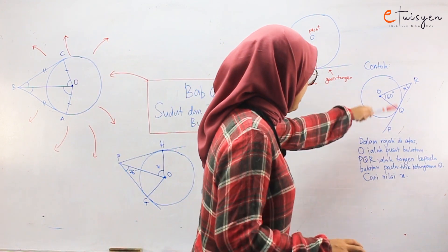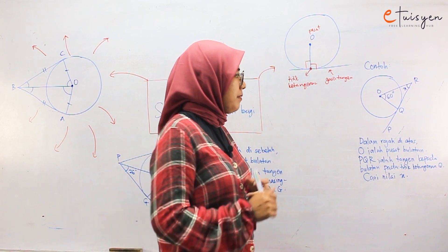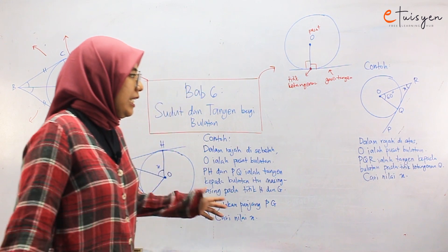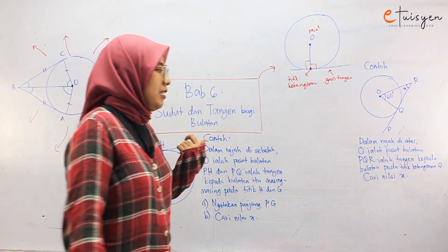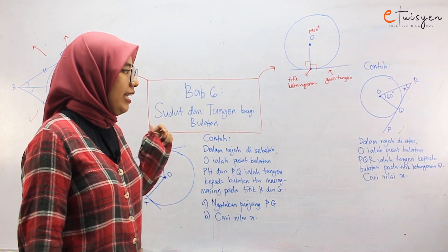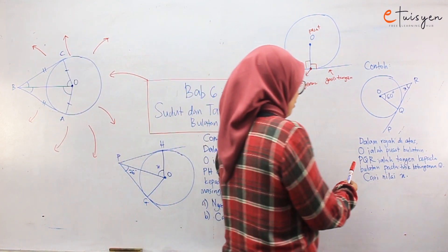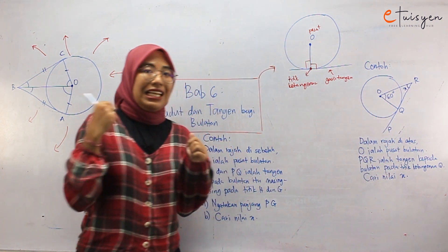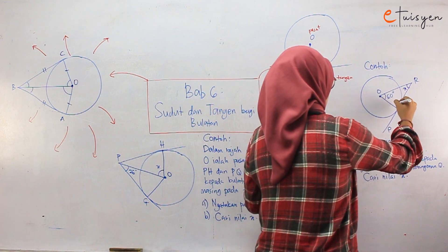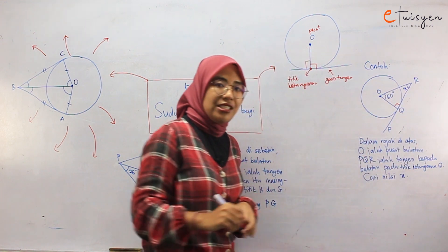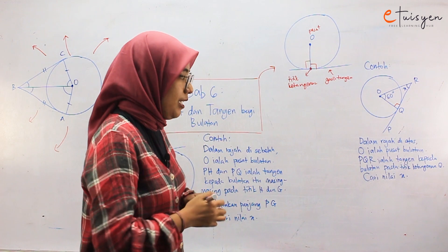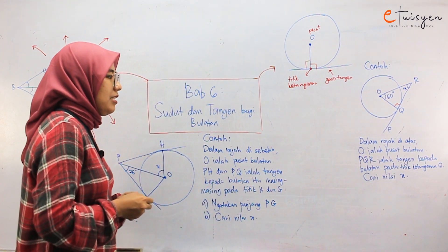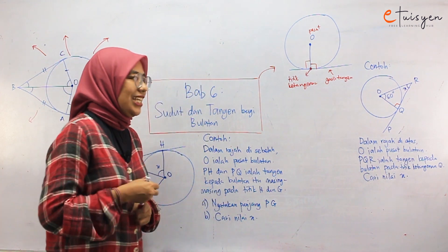Contoh dia kat sini kita ada bulatan. So dia kata dalam rajah di atas, O ialah pusat bulatan. PQR ialah tangent kepada bulatan pada titik ketanjenan Q. Cari nilai X. So sekarang ni dia dah bagitahu dah PQR ialah tangent kepada bulatan. So bila dia cakap itu adalah tangent, terus ingat ini adalah 90 darjah, berdasarkan ciri yang kita bincangkan tadi.